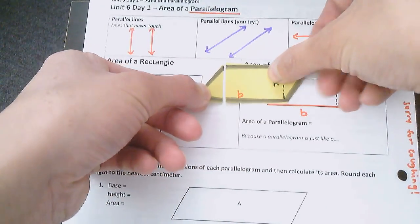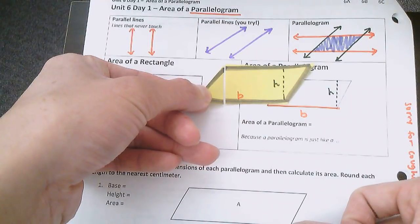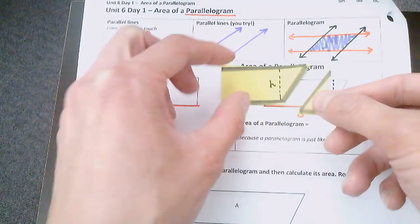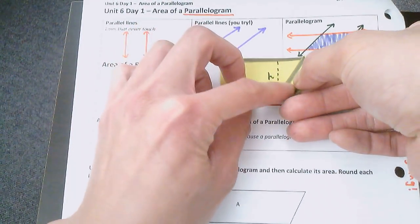Okay. So my parallelogram was like this. And I cut off this triangle. And if I cut off this triangle, and I move it to the other side and I reconnect it with the shape right here.